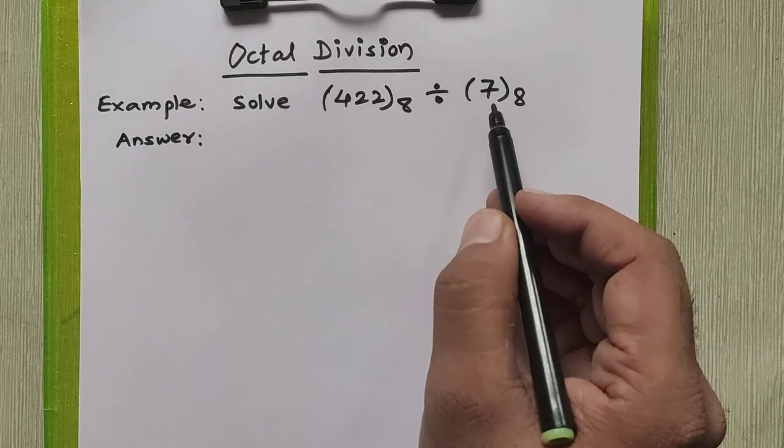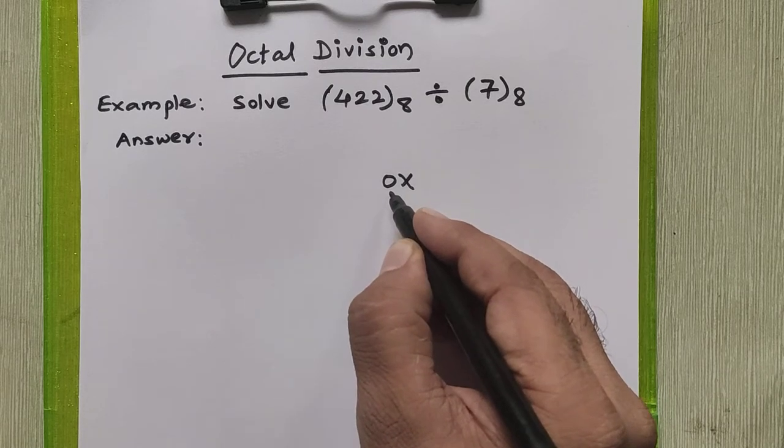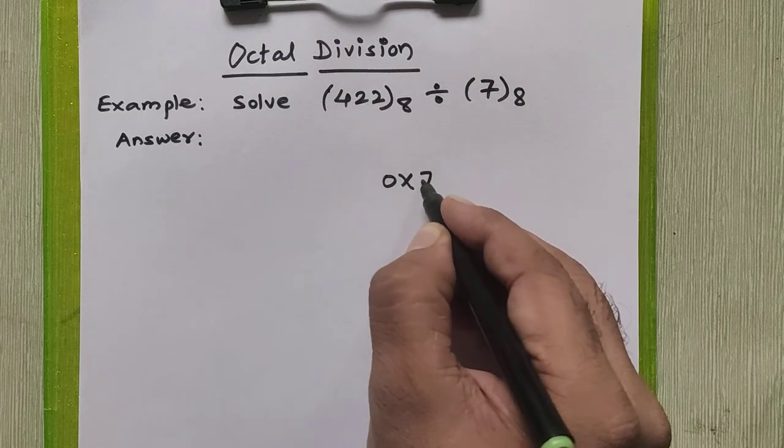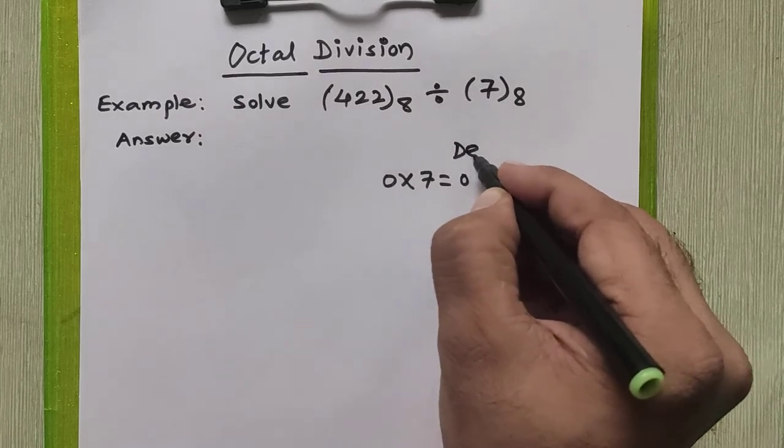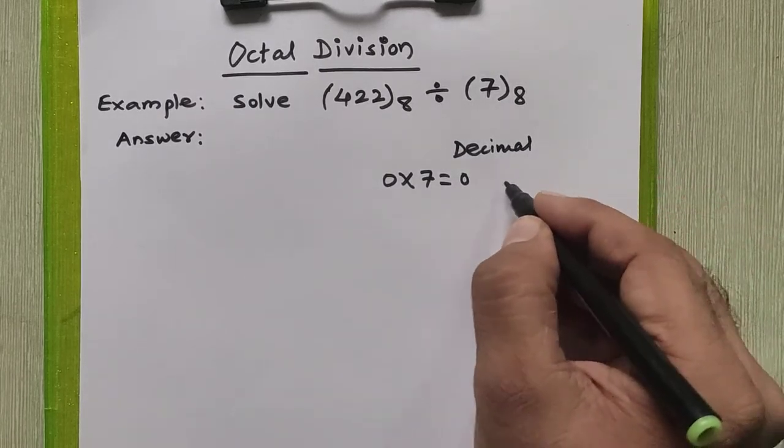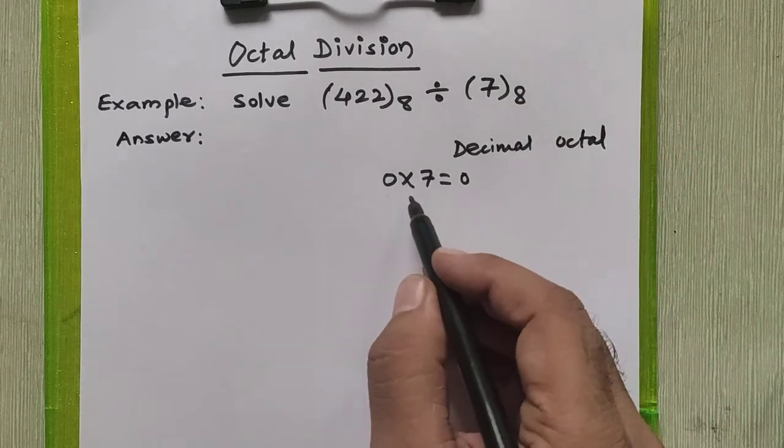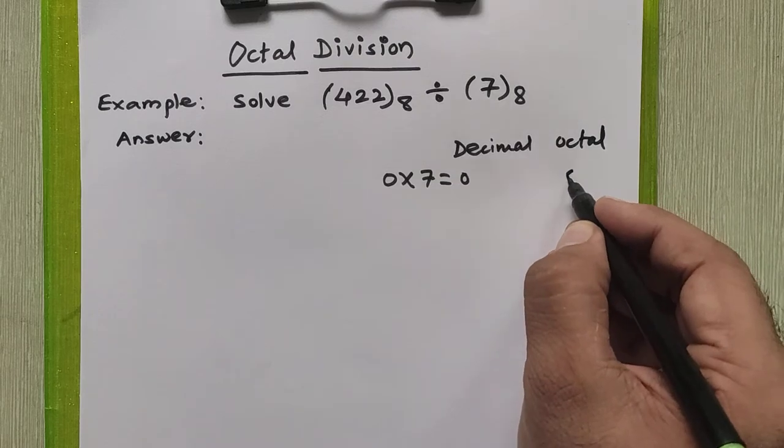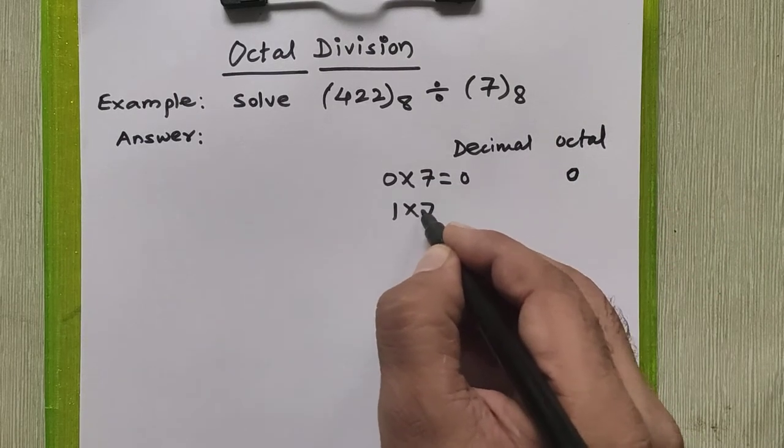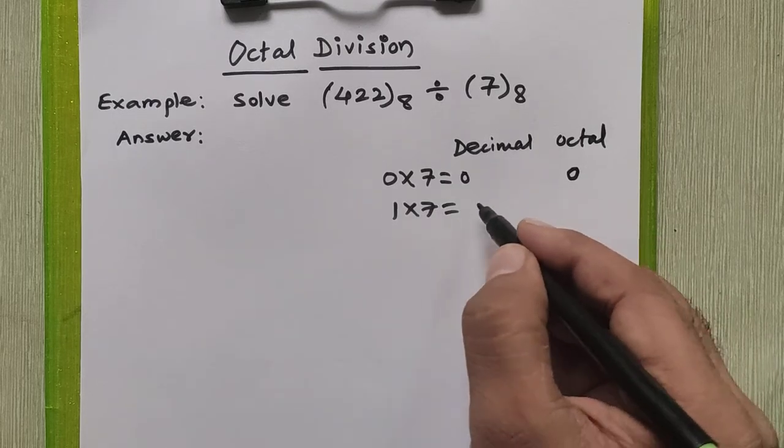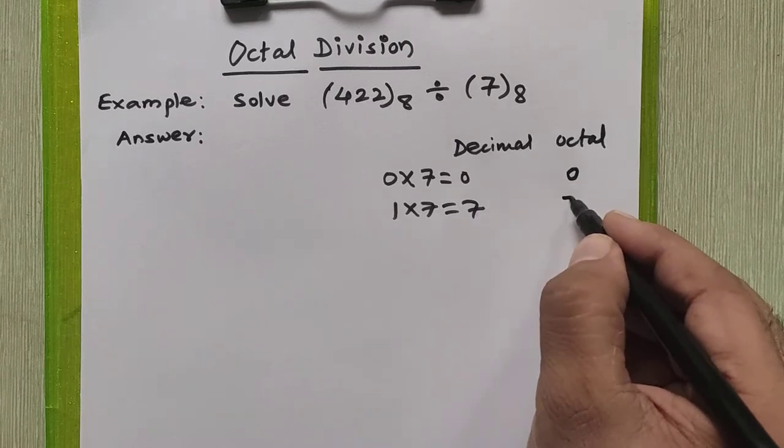The first valid digit in octal number is 0, so we'll multiply it by 7. The total is 0 in decimal, and we're going to convert this into octal. When you convert 0 into octal, 0 is a valid digit, so the octal equivalent is 0 itself. 1 into 7 total is 7. It is also a valid digit, there is no need to convert, so we'll copy it as it is. So 7 decimal is equal to 7 octal.